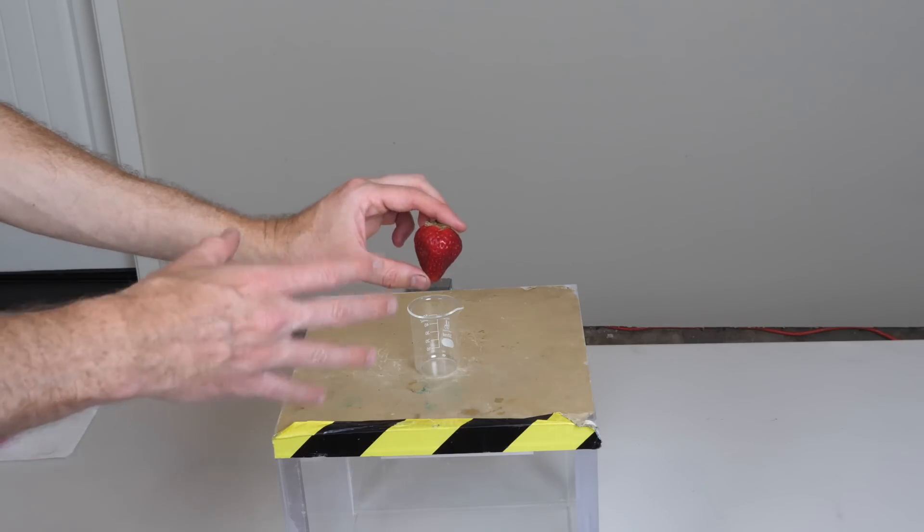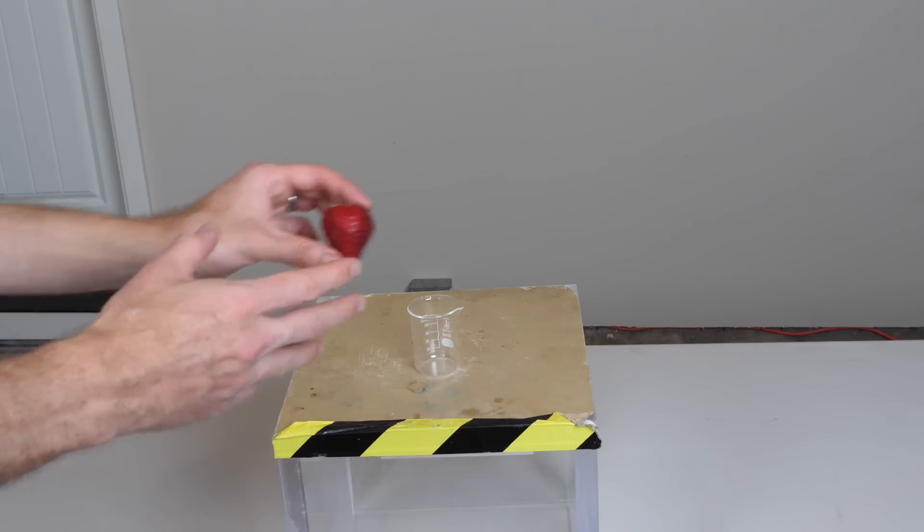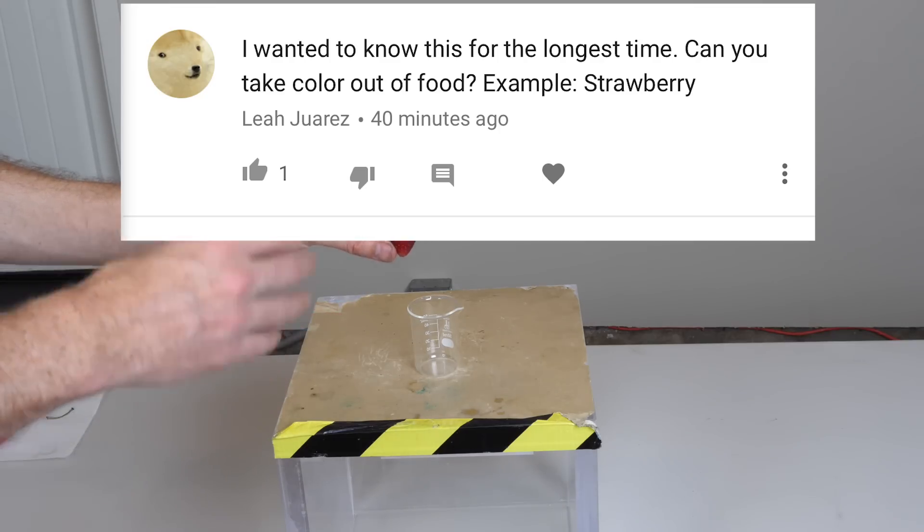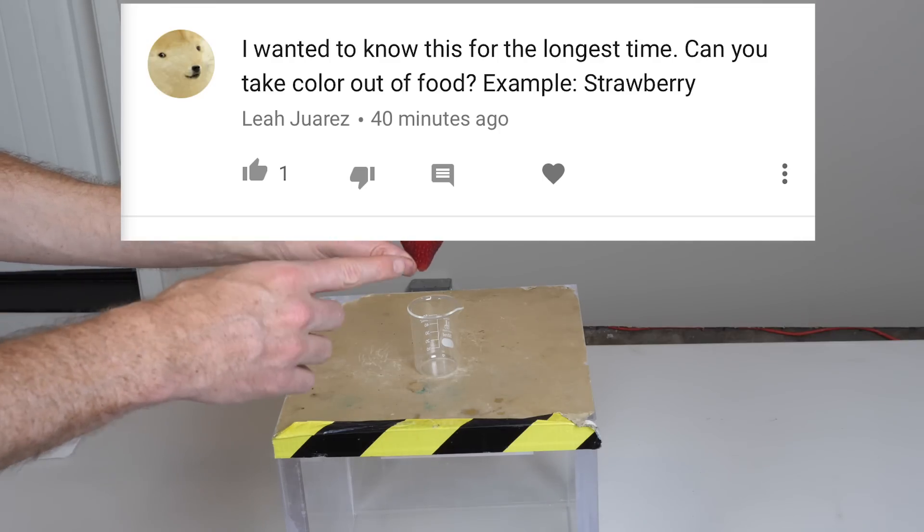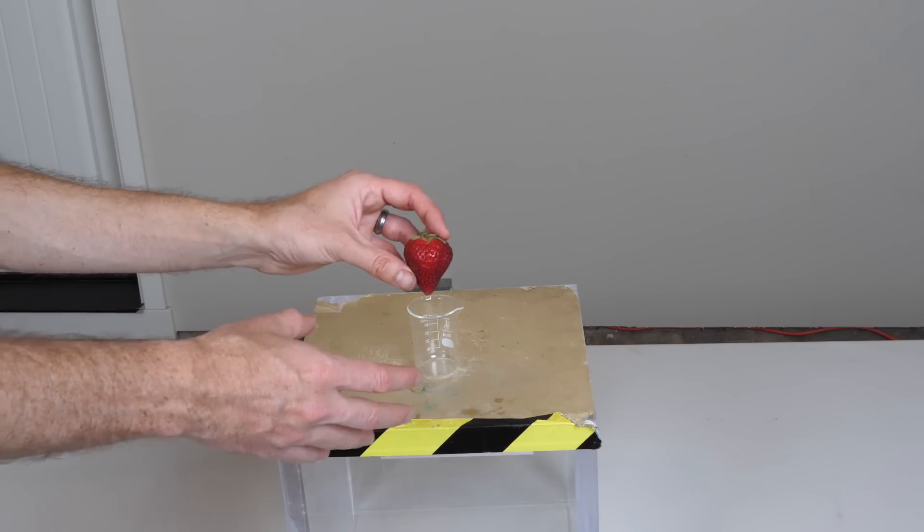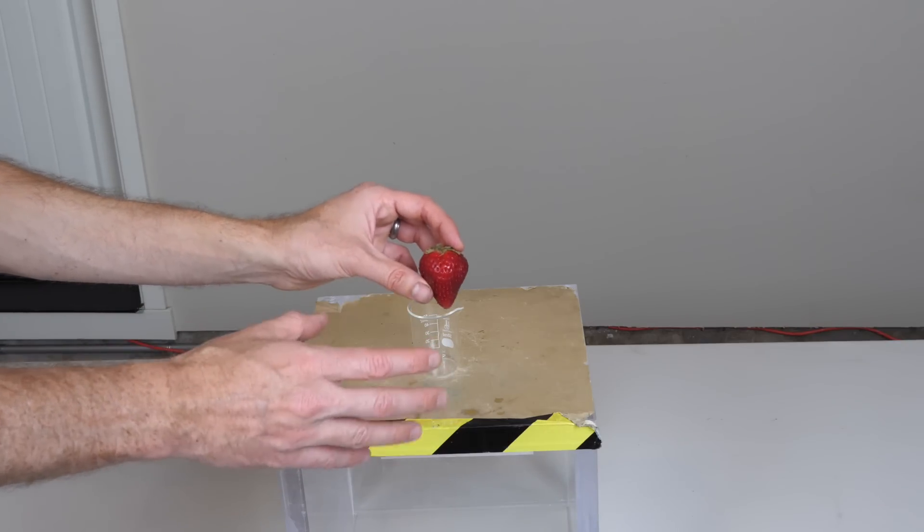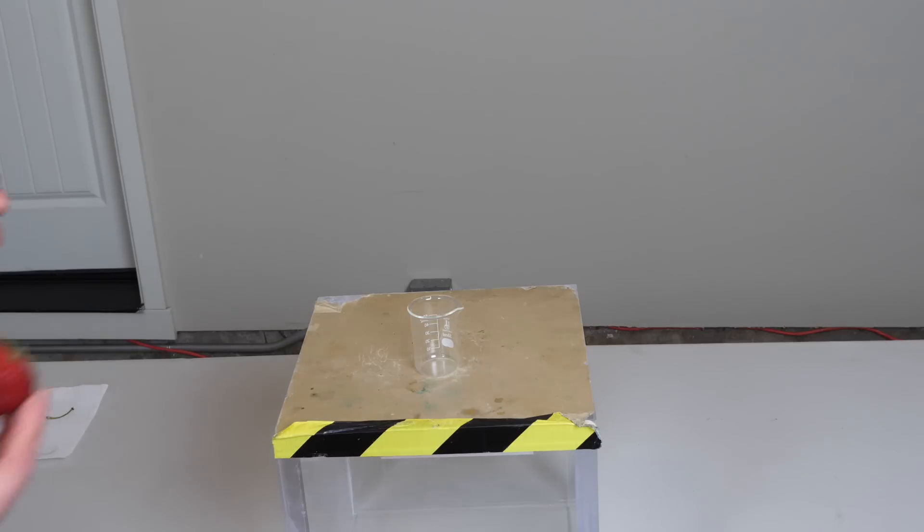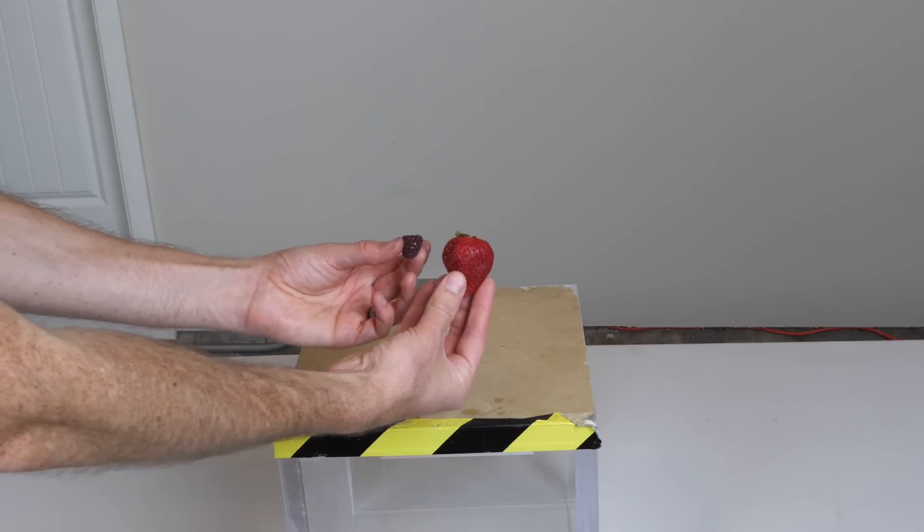Today we're going to see if you can take the color out of food. I got this question a few days ago from Leah Juarez, who asked: can you take the color out of food, for example a strawberry? So I decided to see what happens when we try to take the color out of food. Let's see if I can turn a strawberry or raspberry white.